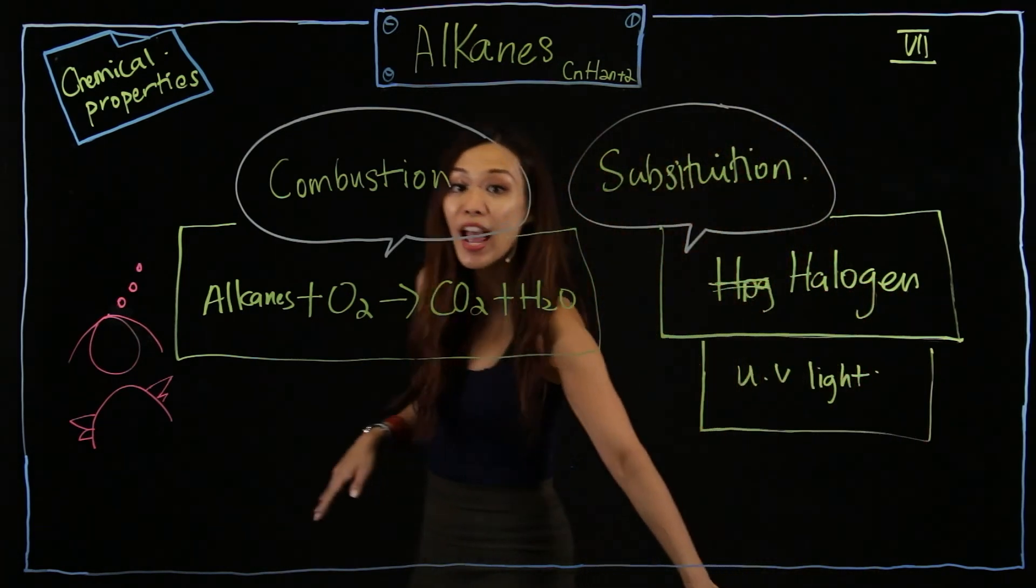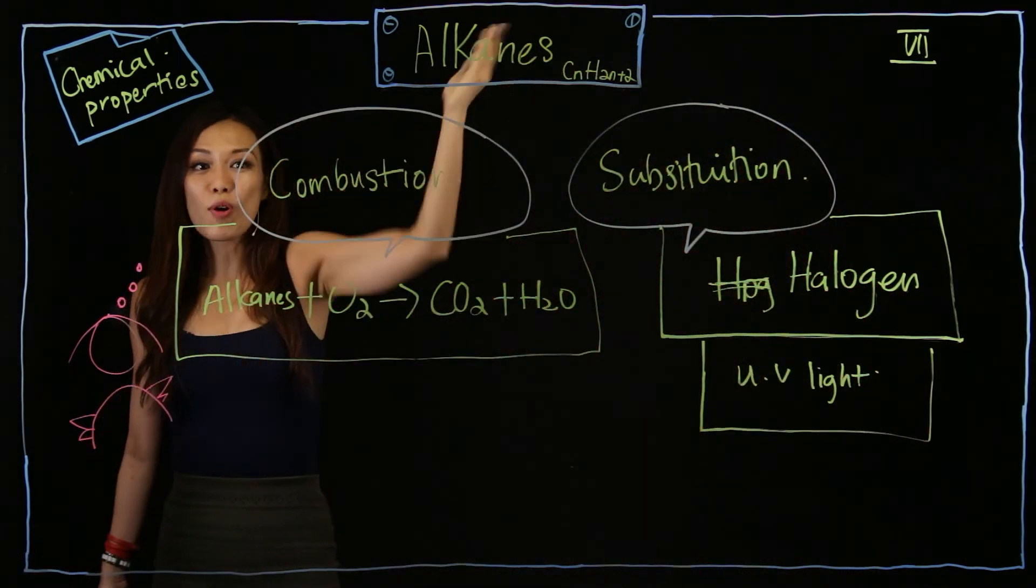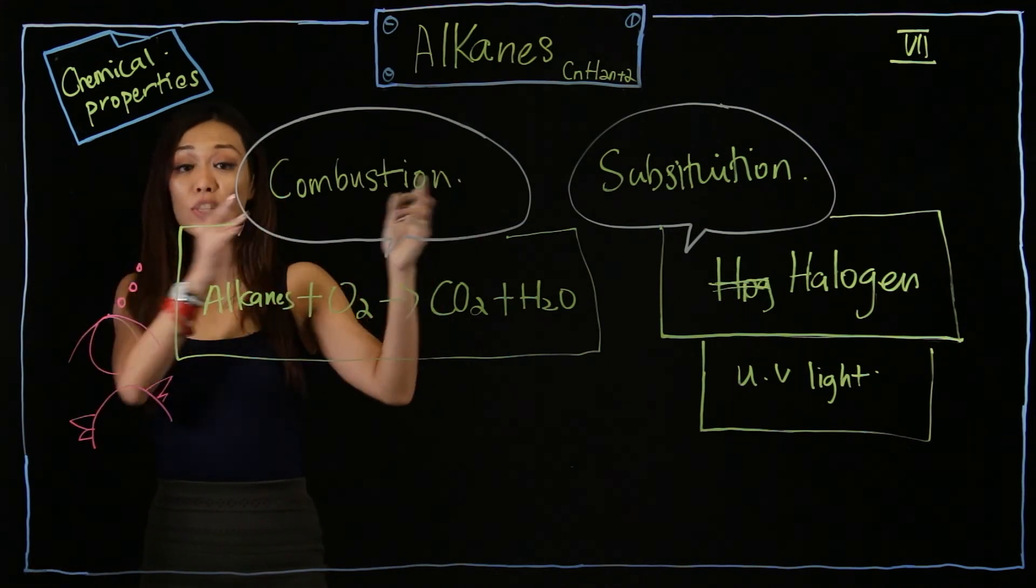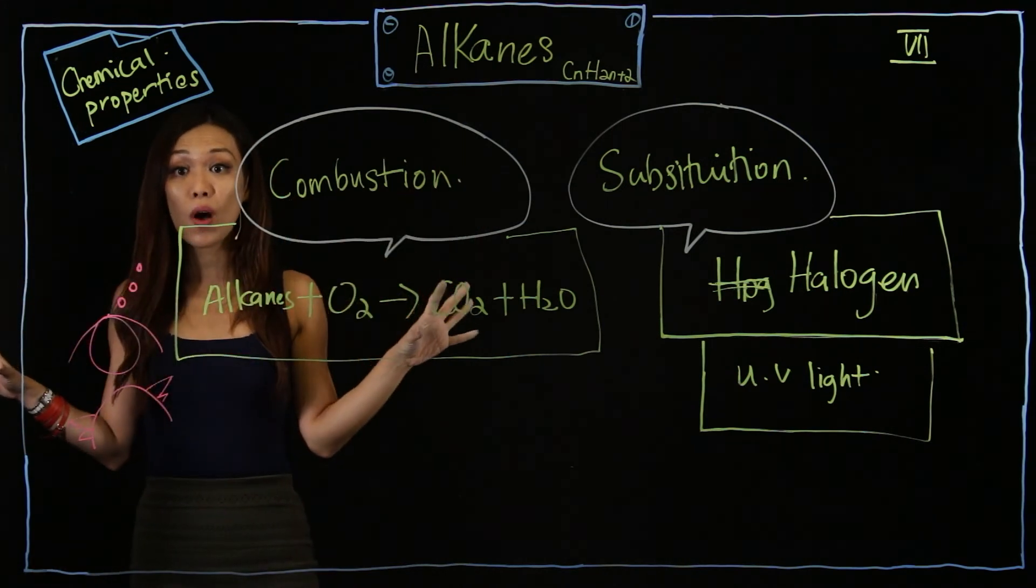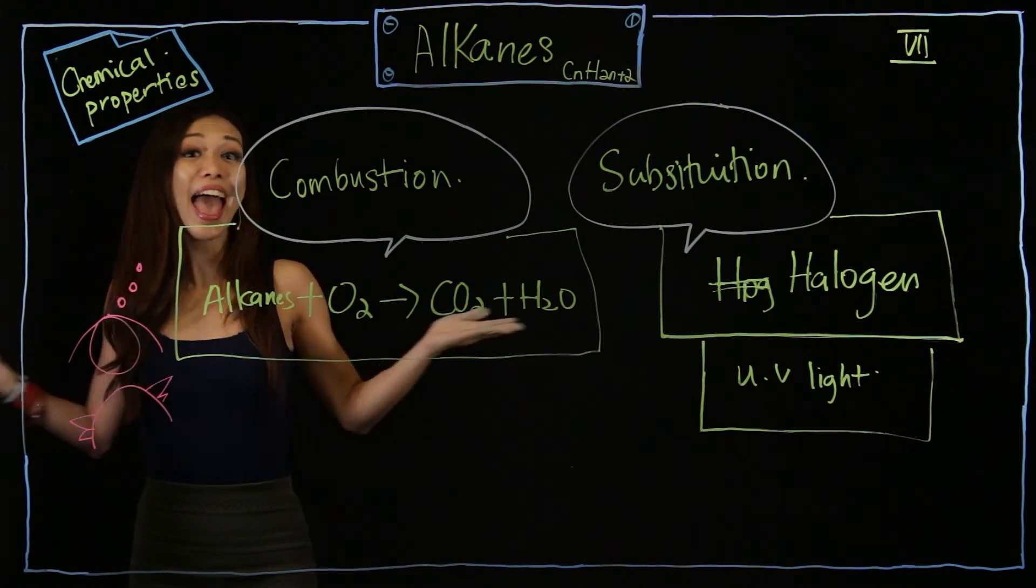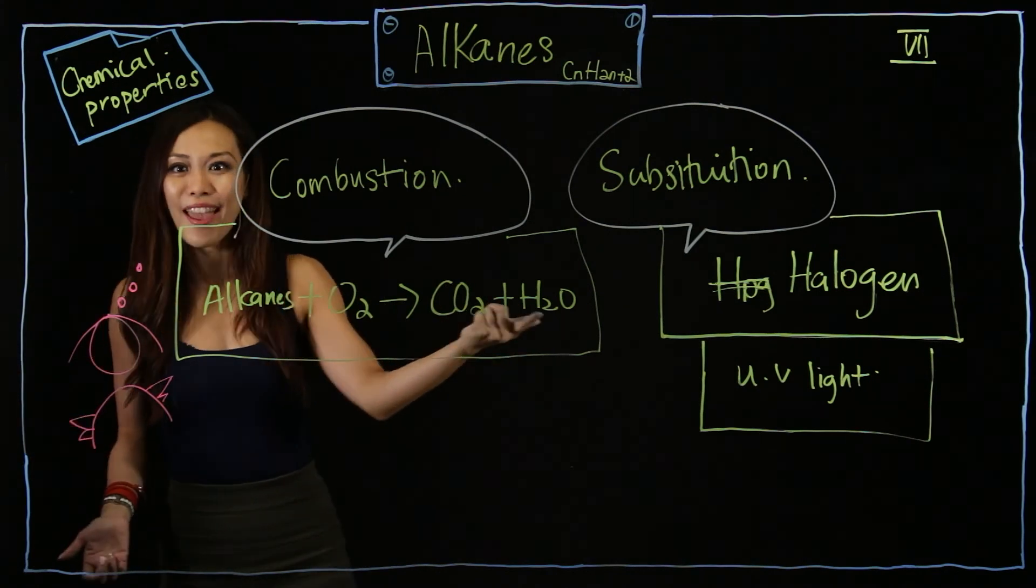So, only two basic reactions. For alkanes, they will go through combustion. And, this combustion, you must bear in mind, whatever homologous series you are, you will go through combustion.